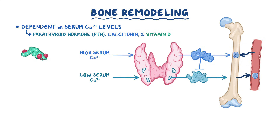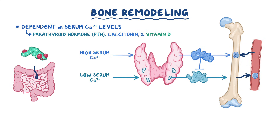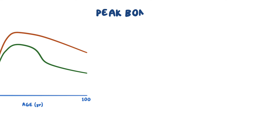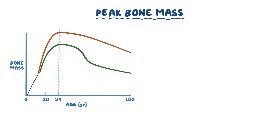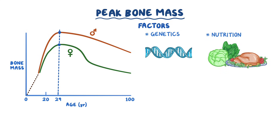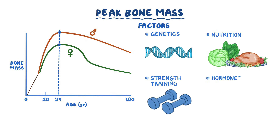Vitamin D promotes calcium absorption in the gut, so it increases serum calcium, promoting bone formation and decreasing bone resorption. The balance between these regulatory factors results in a peak bone mass, usually by age 20 to 29, and this usually occurs earlier in females than in males. Factors that determine the peak bone mass are genetics, nutrition — meaning adequate vitamin D intake increases peak bone mass — strength training, and hormones like estrogens and androgens that inhibit bone resorption.